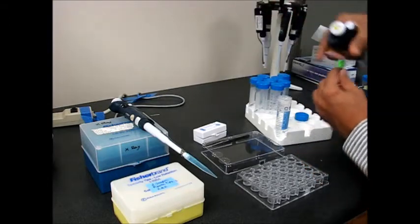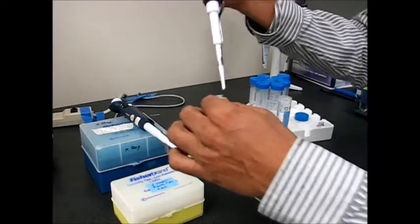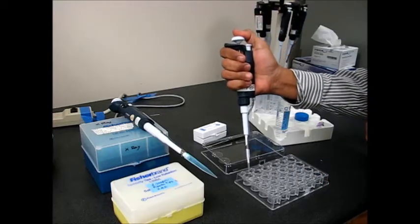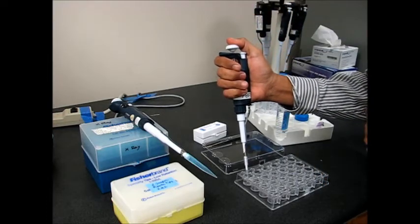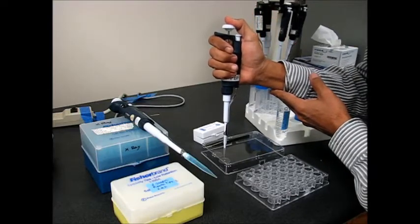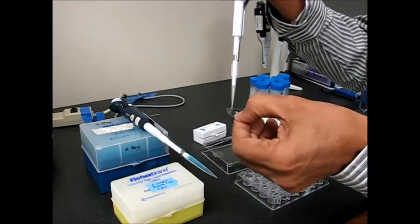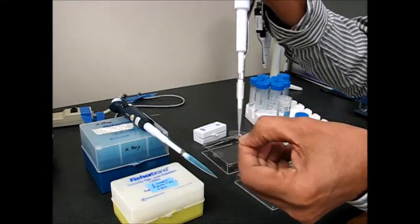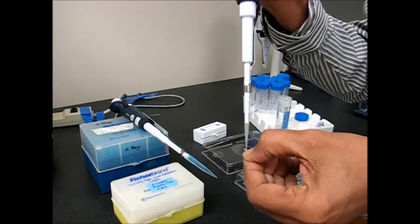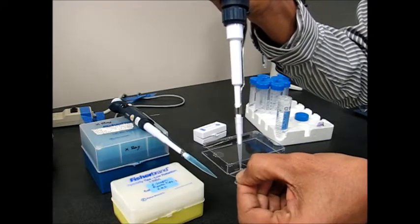After I transfer the cover slip, I put the protein away, change the tip, and then take the same amount of solution from the precipitant and put it on top of the cover slip where the protein is. I pick up this cover slip and then mix the solution a couple of times so that the protein and the precipitant are mixed.